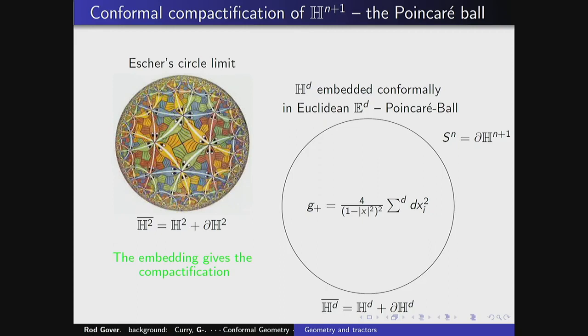Mathematically and in any dimension, this is the embedding of d-dimensional hyperbolic space into d-dimensional Euclidean space, specifically into the unit ball. Here's the Euclidean metric — the usual flat metric — and we're conformally rescaling it by 4 over (1 minus x·x). When x·x equals 1, this is something over zero, so it's infinite. This is taking the Euclidean metric and making it blow up to infinity as you get to the boundary.